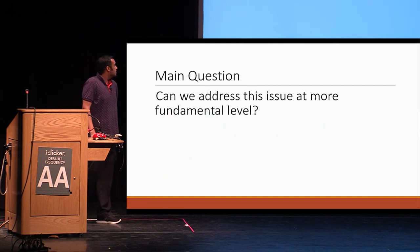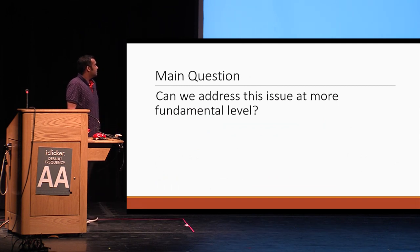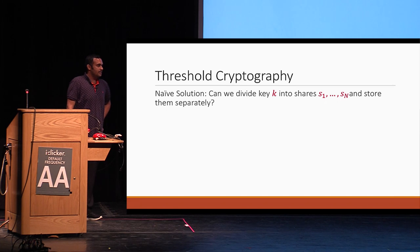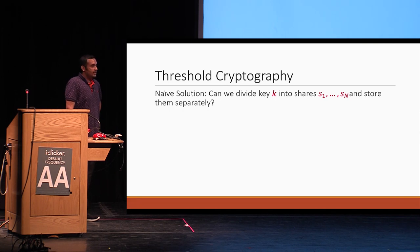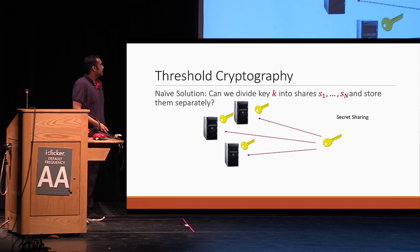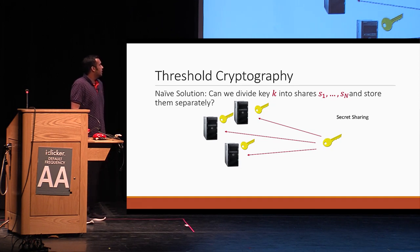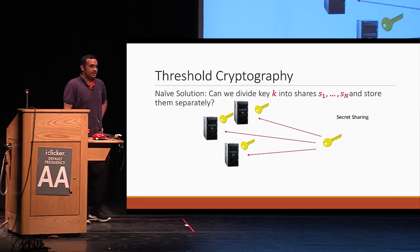So this is the main question we ask in this paper: can we address this issue at a more basic and fundamental level? This area is that of cryptography. So let's just consider a naive solution first. Can we divide the key K into shares S1 through SN and store them separately? You have a key and you just use a secret sharing scheme and store it across servers. But note that such a naive way of secret sharing is not going to lead you anywhere, because Tony has to reconstruct all these secret keys in order to do anything meaningful with it.